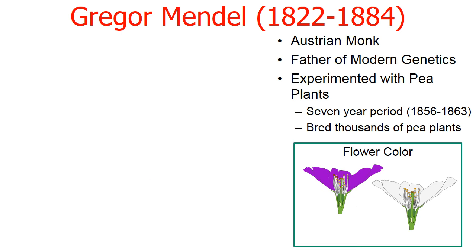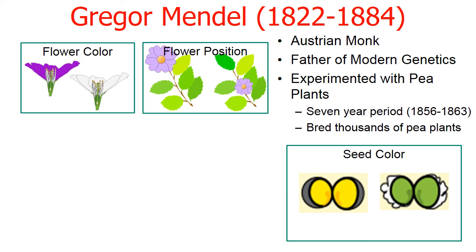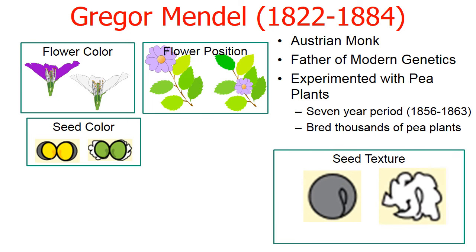Mendel experimented with seven different traits from these pea plants. One of the traits was flower color — the flowers sometimes grew purple petals and others grew white petals. He examined flower position: were the flowers in the terminal position at the tips of the branches, or in the axial position inward on the branches? He also examined seed color — were the seeds yellow or green — and the texture of the seeds: did they have a smooth touch or a wrinkled texture?